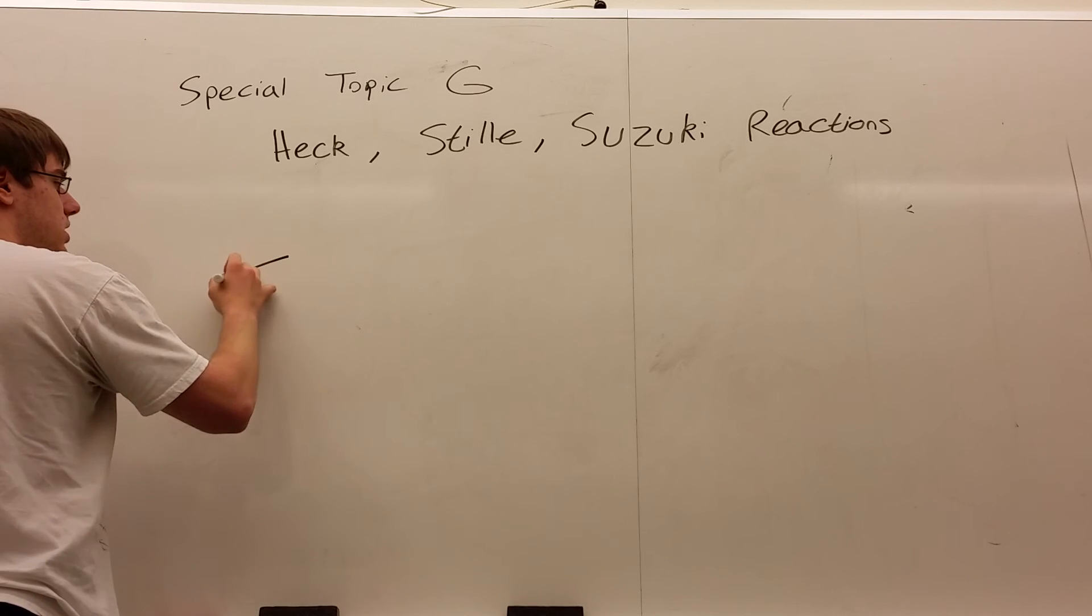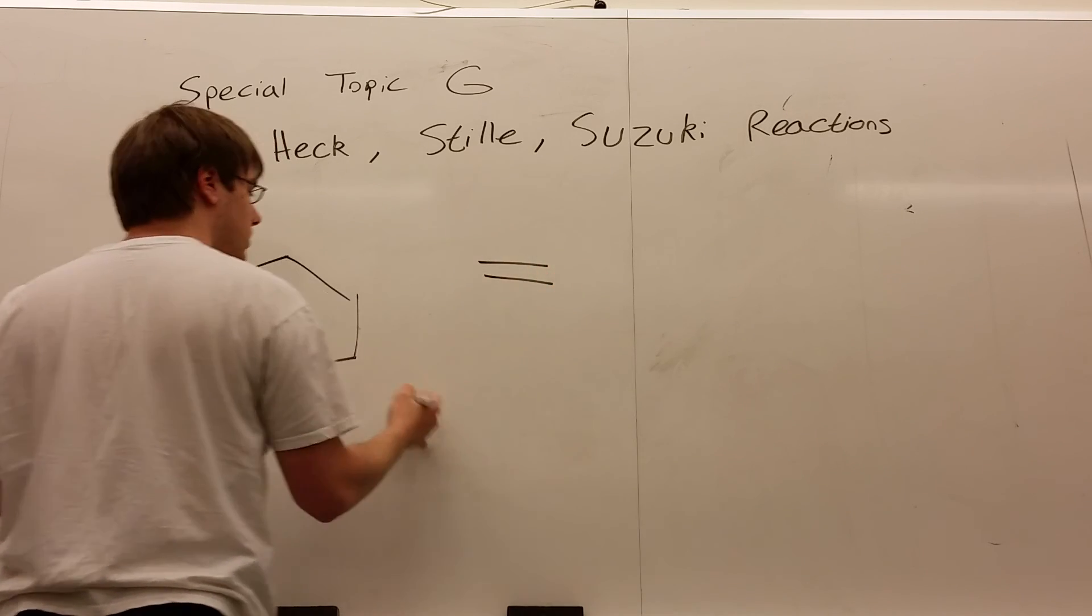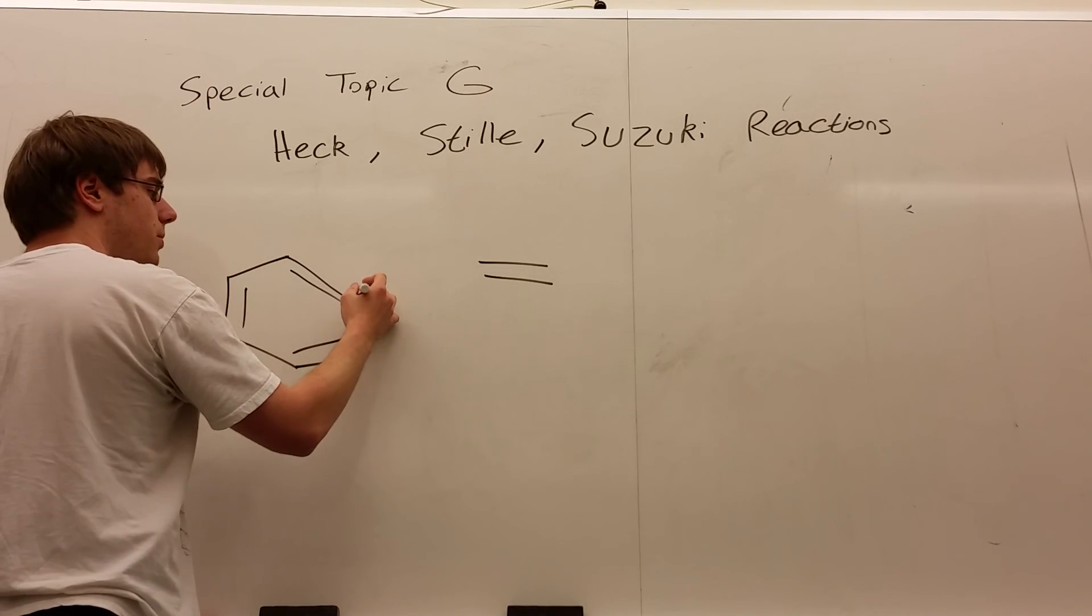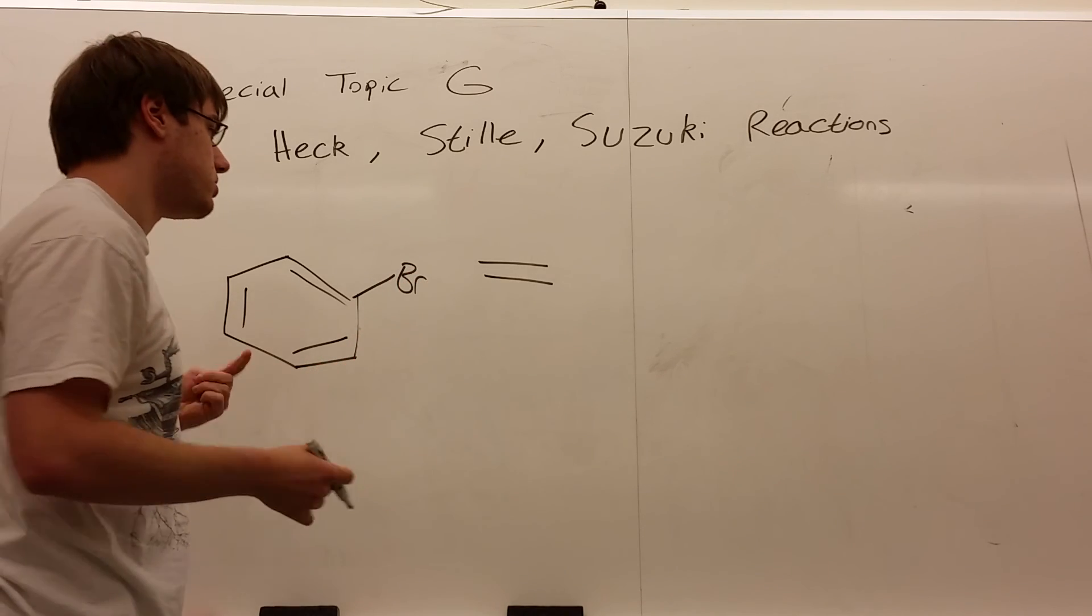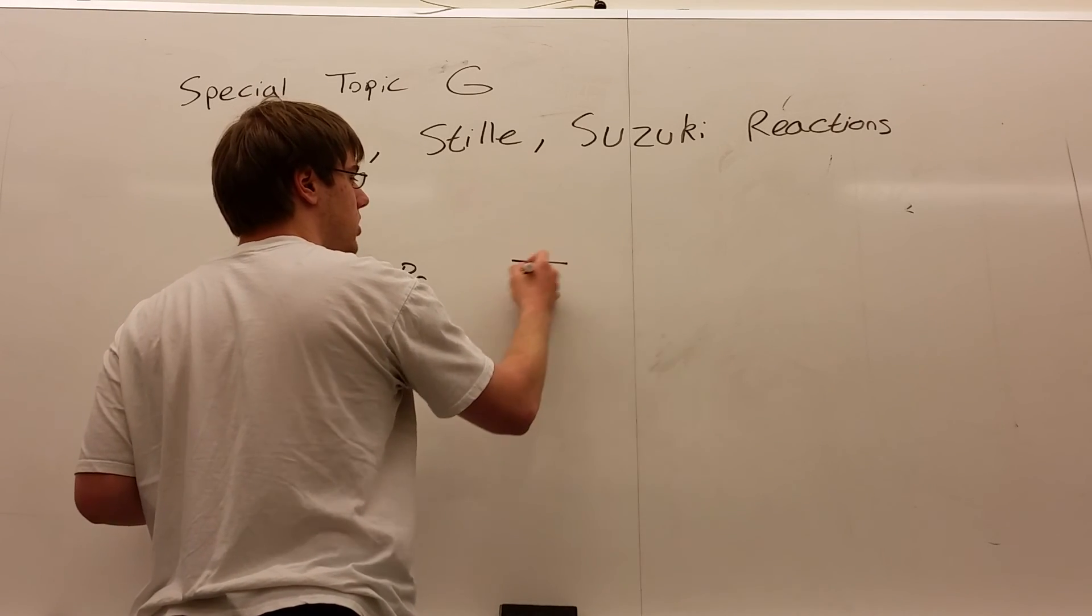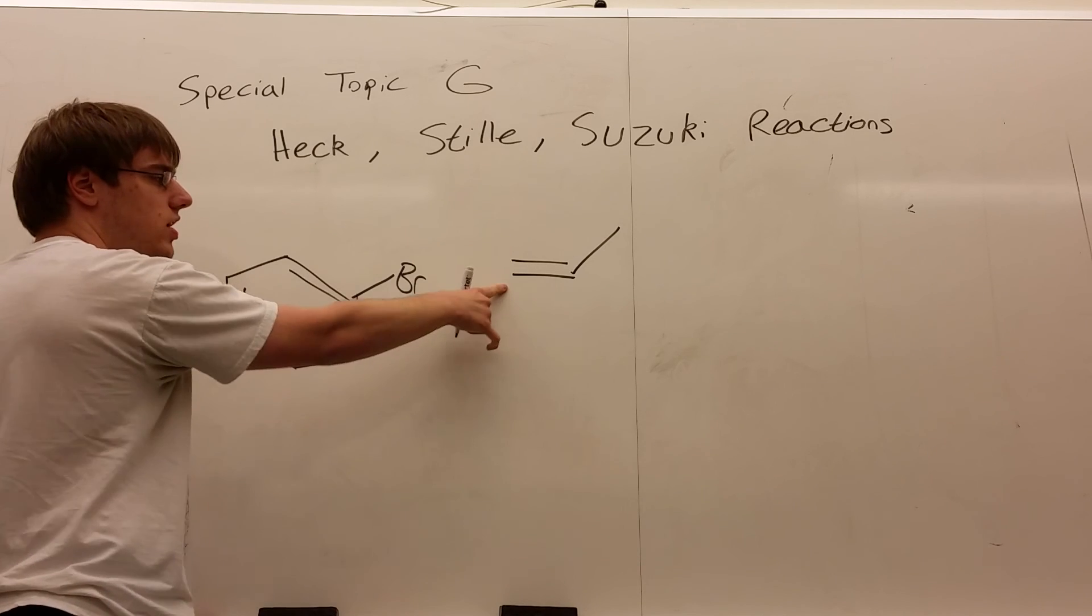In general, you're going to see two carbon-carbon double bonds. We'll use a benzene here. On one of those carbon-carbon double bonds, there will be a leaving group like bromine, iodine, or chlorine. They're always going to be halogen leaving groups. On the other double bond, there's nothing really special about it. Usually it's terminal, though, meaning one end has two hydrogens on it, this end on the left.